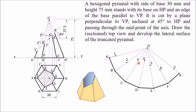Mark point 3 on OC and point 5 on OE at the same distance. Join all these points with thick lines — the remaining edges such as A2, 1F, 2 6, and so on. This is the required development of the lateral surface of the truncated hexagonal pyramid.